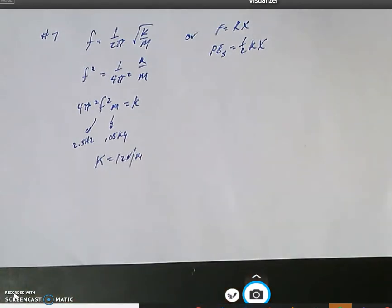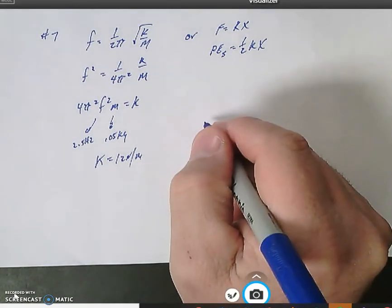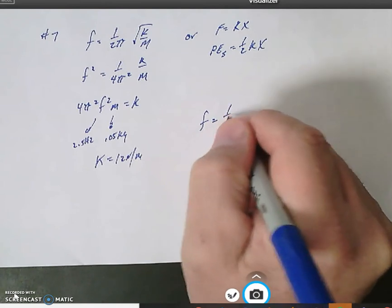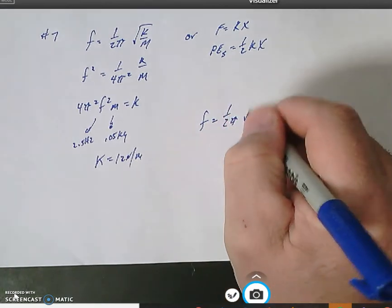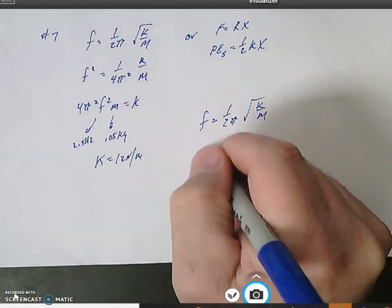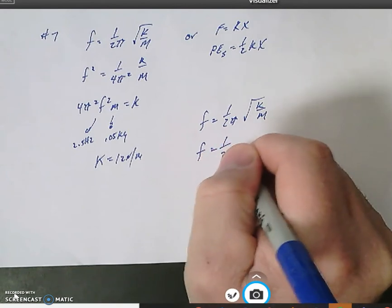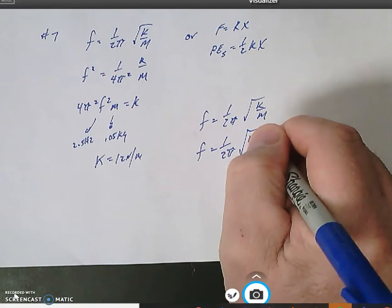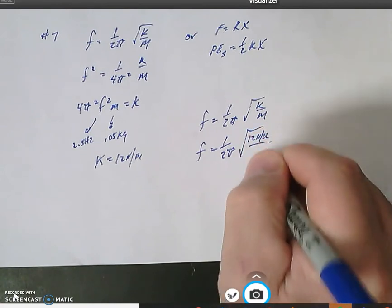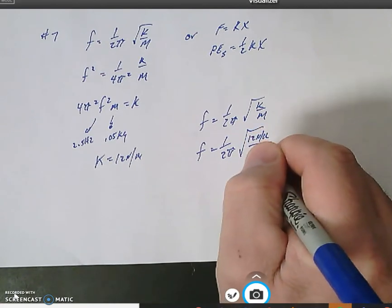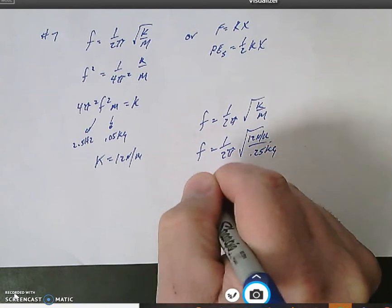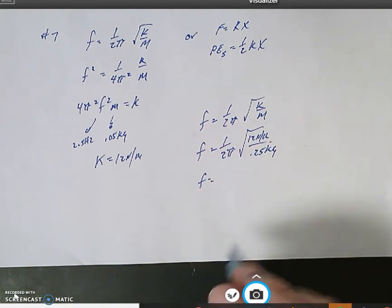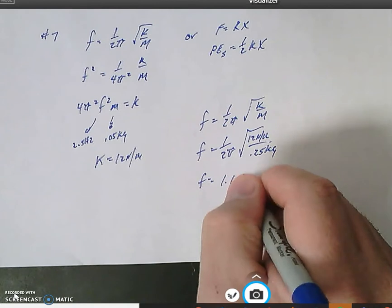And then for part b, basically we just increase the mass on that setup so that we can reuse this idea of frequency equals one over 2π square root k over m. And we just figured out the k value. The k value stays no matter what the mass is, 12 newtons per meter. And now we got a new mass of 0.25 kilograms, so therefore the frequency of oscillation becomes 1.1 hertz.